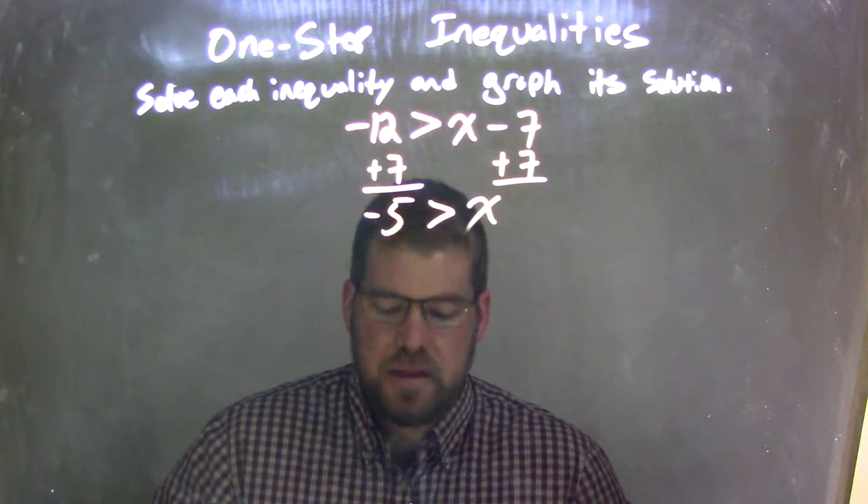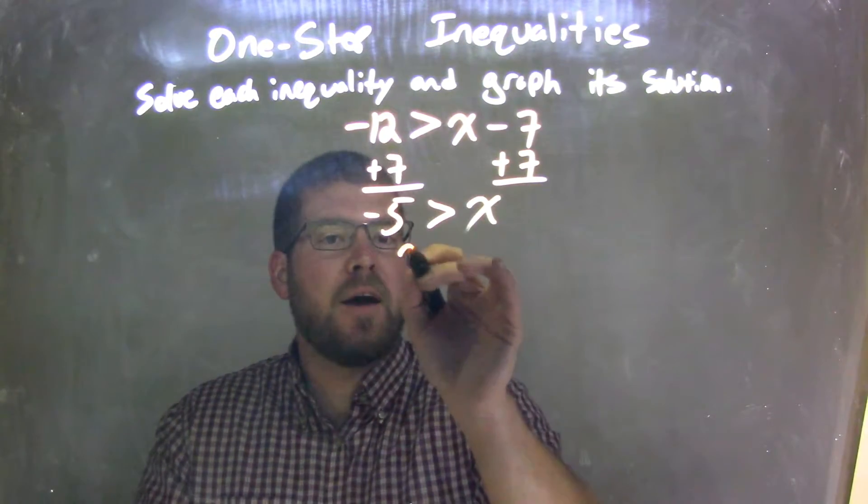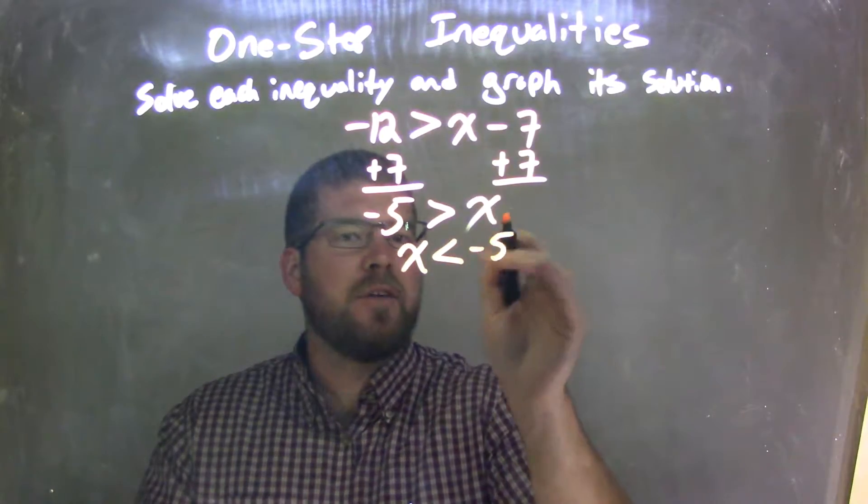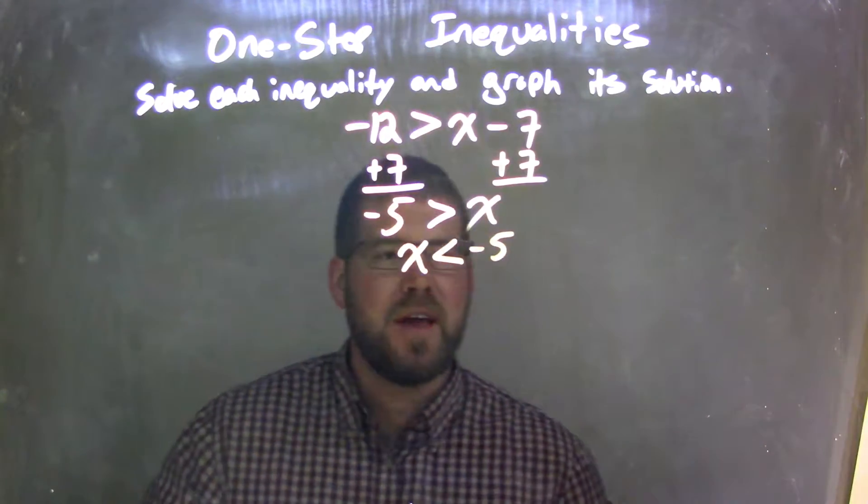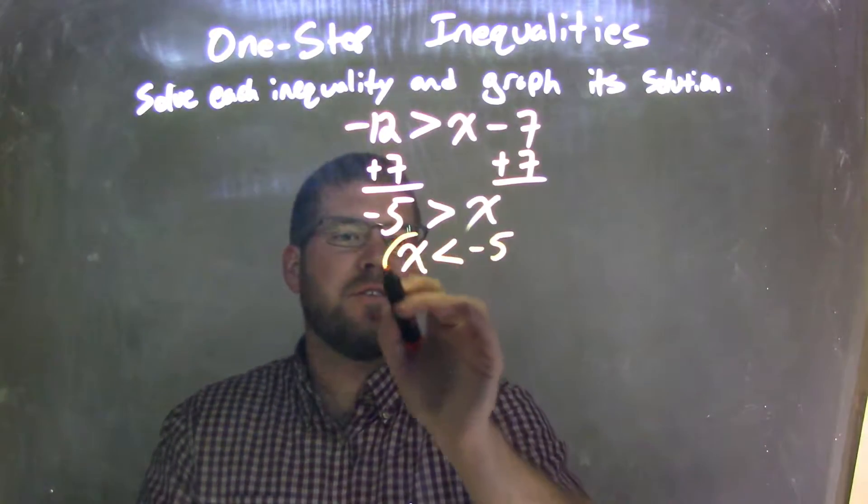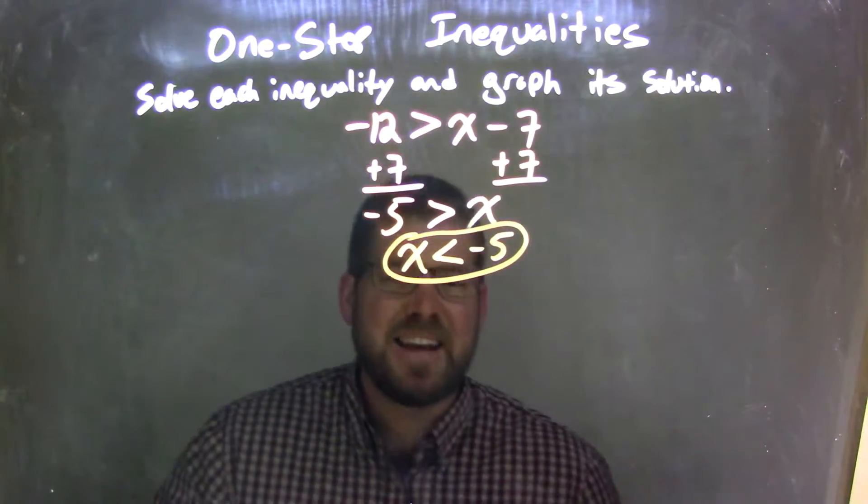So we're given that negative 5 is greater than x, or we can think of it like this: flip it around, x is less than negative 5. The open part is to negative 5, the closed part of the inequality goes to x, and there we go. We have x is less than negative 5.